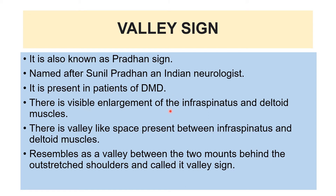There is a visible enlargement of the infraspinatus and deltoid muscles. A valley-like space is present between the infraspinatus and deltoid muscles, which resembles a valley between two mounts, behind the outstretched shoulder — and this is called the valley sign.